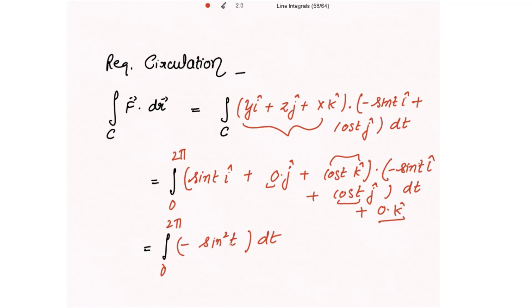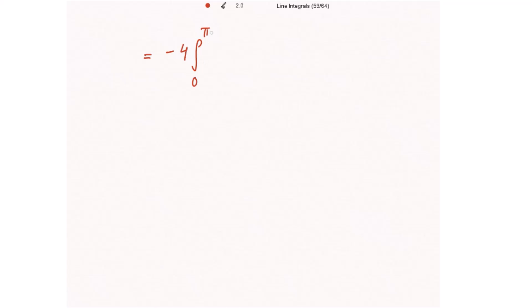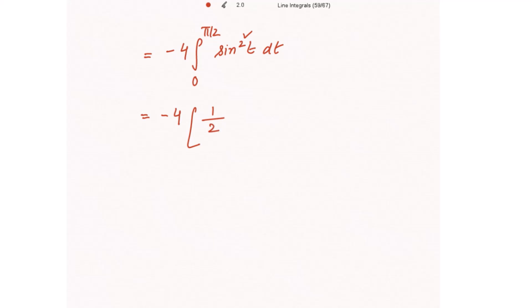Taking the negative sign outside, and because we have an even power, we can write this integral from 0 to 2π as 4 times the integral from 0 to π/2 of sin²(t) dt. This equals -4 times the result. Now using the reduction formula: for even power 2, write odd numbers in the numerator (just 1) and even numbers in the denominator (just 2), and since the power is even, multiply by π/2.